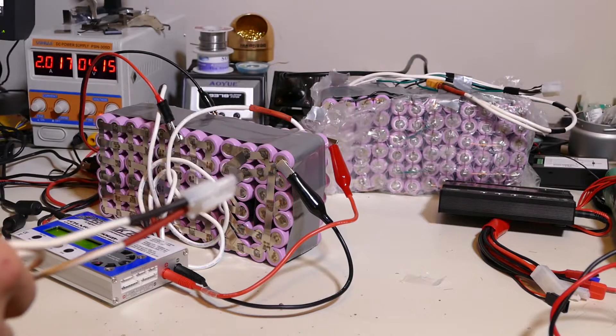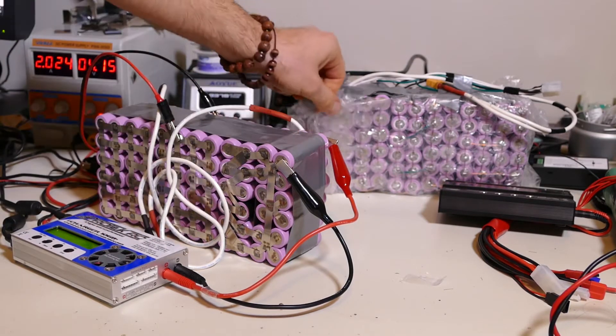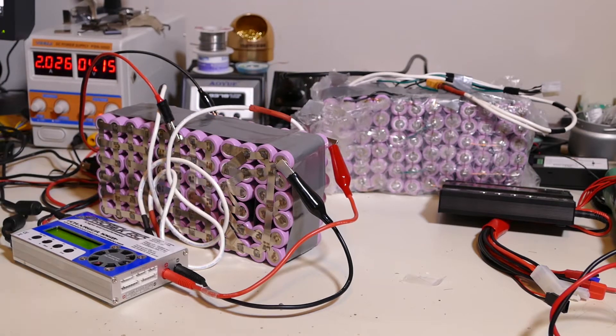When this is all done, this will be 48 volts at 30 amp hours. That's double the voltage I have now, same capacity but double the voltage. So I'm really excited to see what difference that's going to make speed-wise on the e-bike.